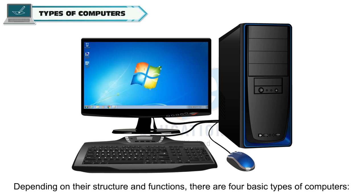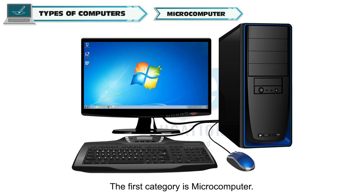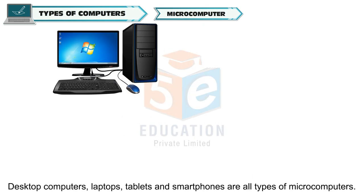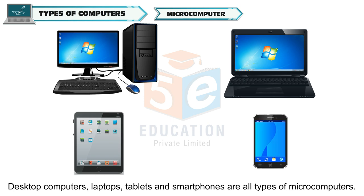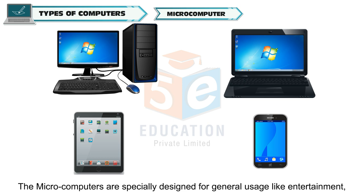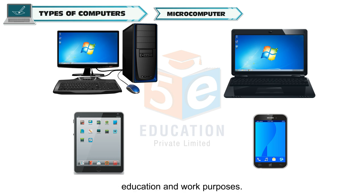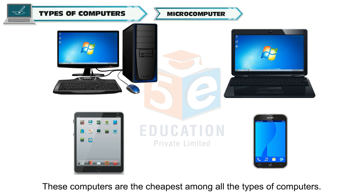Depending on their structure and functions, there are four basic types of computers. The first category is microcomputer. Desktop computers, laptops, tablets and smartphones are all types of microcomputers. Microcomputers are specially designed for general usage like entertainment, education and work purposes. These computers are the cheapest among all the types of computers.